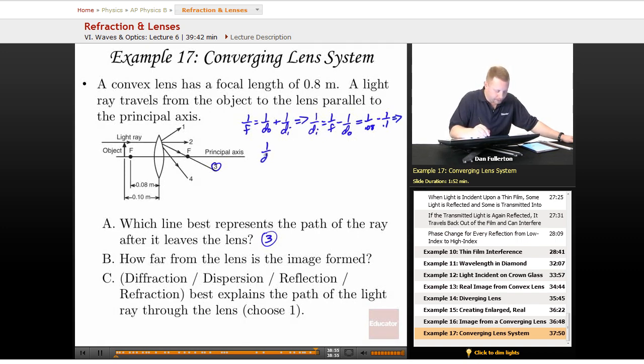Therefore, 1 over DI is going to be equal to about 2.5, which gives us an image distance of 1 over 2.5 or 0.4 meters.